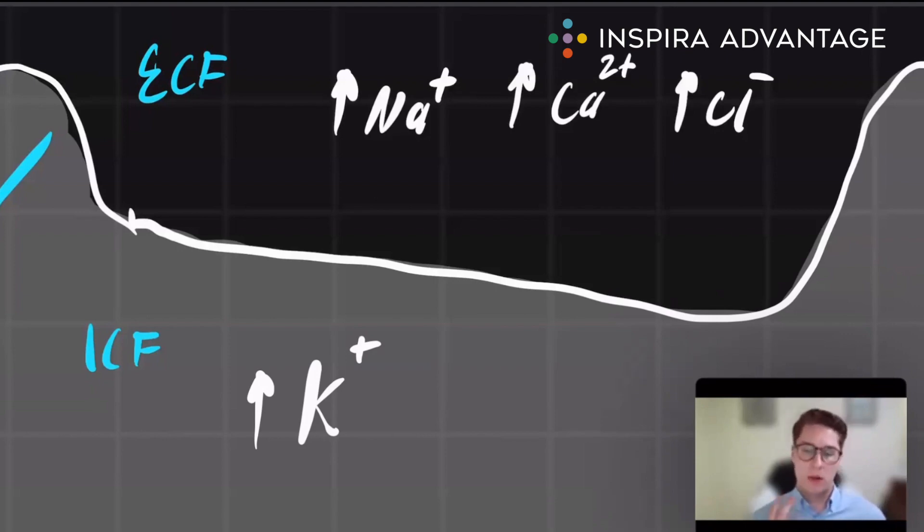Now there are two types of channels that we care about for membrane potentials: leak channels and voltage-gated channels. However, for the resting membrane potential, we only care about leak channels. But be sure to check out our other video on the action potential to see how voltage-gated channels fit into this story.